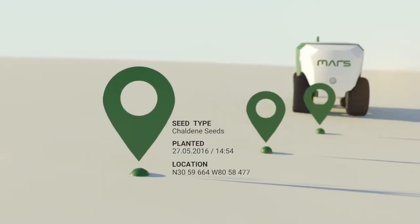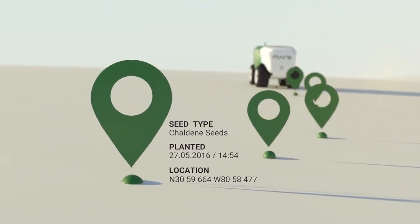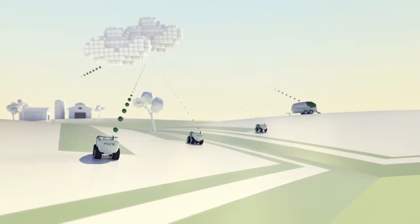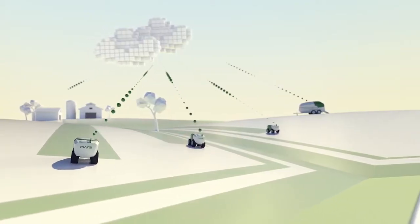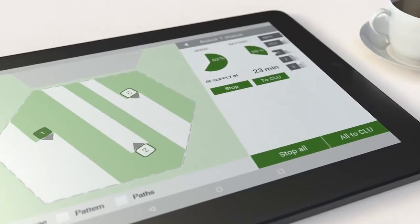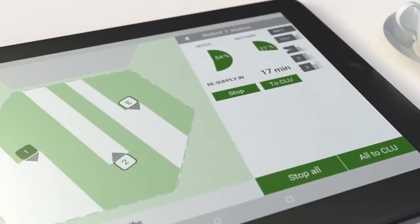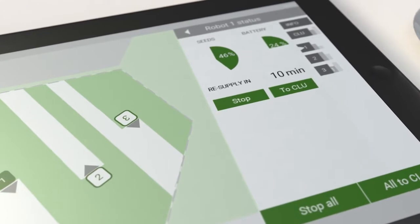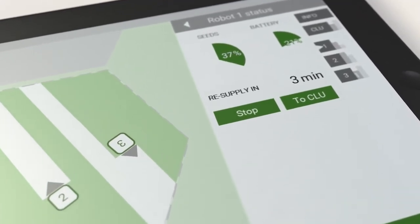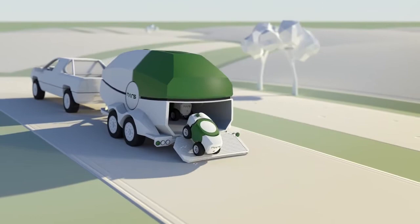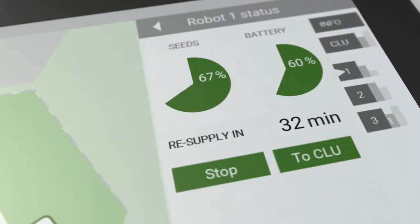The cloud-based system maintains a geo-referenced record for each seed. Each of the robots is connected to the MARS cloud where all data is processed. While the MARS app allows progress monitoring from any mobile device, the supervising control system makes sure every robot returns to the logistic unit in time for recharging and seed refill.